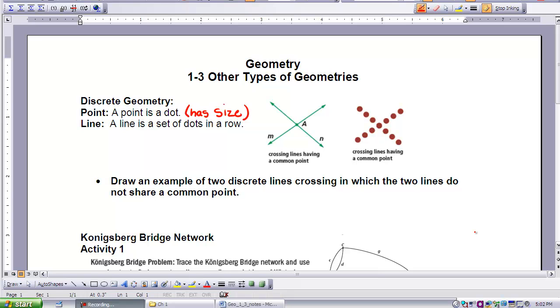In discrete geometry, we actually describe a point as a dot. In this geometry, the dot has size. If we want to describe a line in discrete geometry, that line is simply a set of dots in a row. When looking at lines in discrete geometry, we can see in this red drawing here that our lines intersect and they have a point in common.